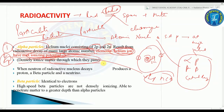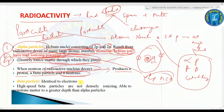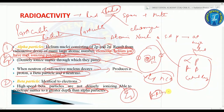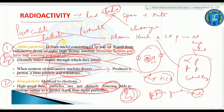When a neutron of the radioactive nucleus decays, it produces a proton, a beta particle, and a neutrino. Beta particles are identical to electrons. High-speed beta particles are not densely ionizing and are able to penetrate matter to a greater depth than alpha particles. Beta particles have high speed, are not densely ionizing, and have greater penetration power than alpha particles.